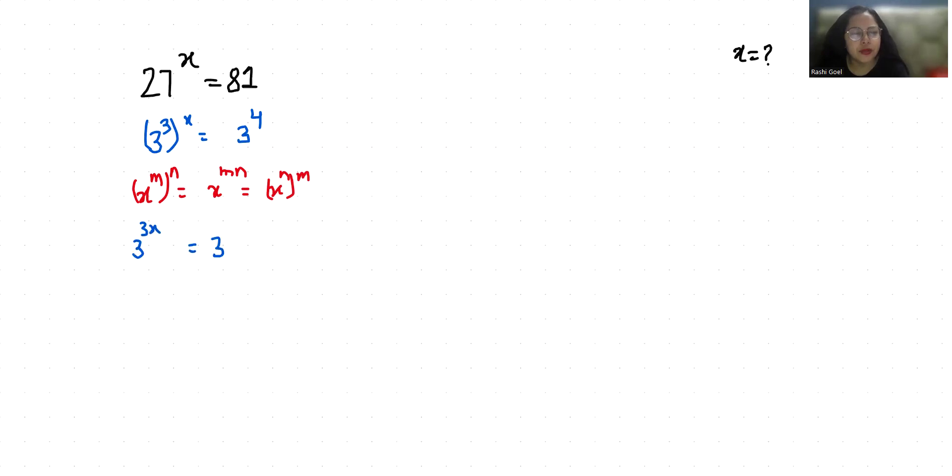Now I compare both sides. If the bases are equal, their powers are also equal. So 3x equals 4. Now I'm going to divide both sides by 3.